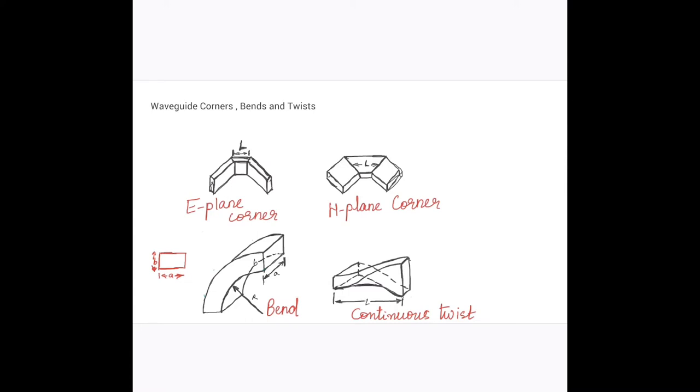Suppose we want to change the direction of the waves, then we can use these bends to change the direction of the wave. Through however much angle we want to change, depending upon that, we can use any of these waveguide bends, twists or corners to change the direction.